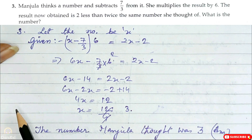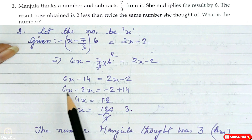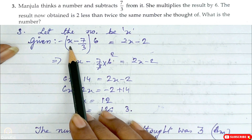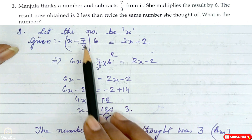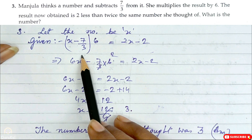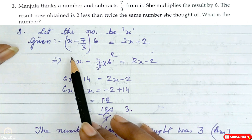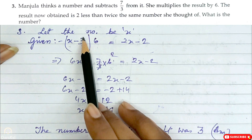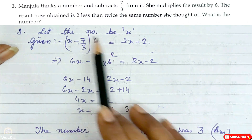Manjula thinks of a number and subtracts 7/3 from it — the number was x, so she subtracts 7/3: put it in brackets because the result is then multiplied by 6. Therefore (x minus 7/3) multiplied by 6.